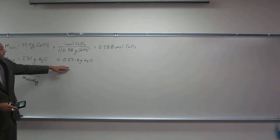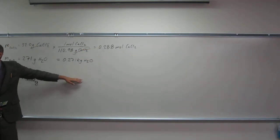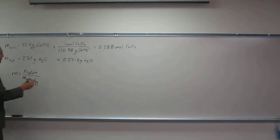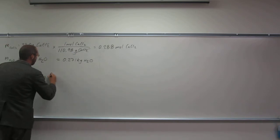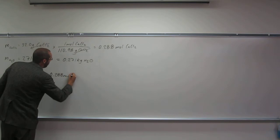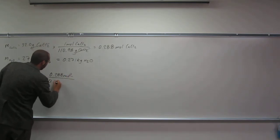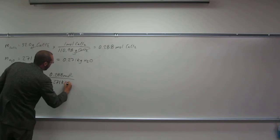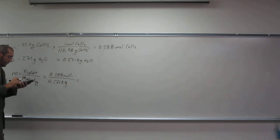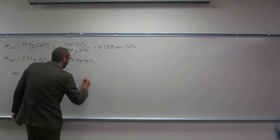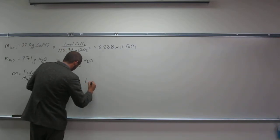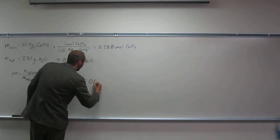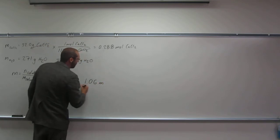Divided, and then, yeah, so we got the two numbers we want, right? So we're just going to plug each other in. So 0.288 moles divided by 0.271 kilograms. And I get 1.06, and we say molal.